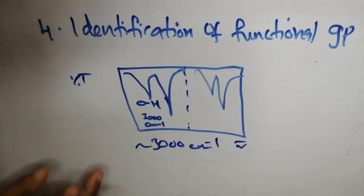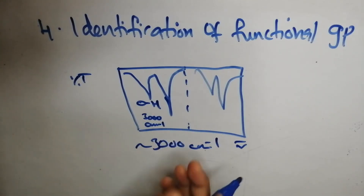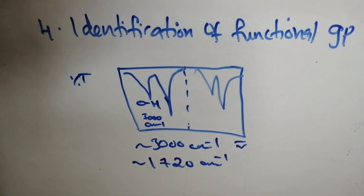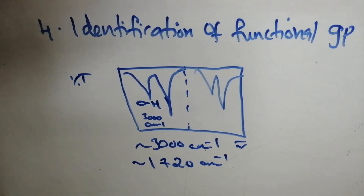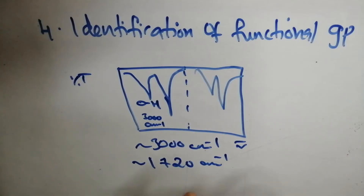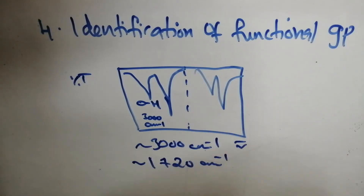If there is a peak in the range around 1700 to 1720 cm⁻¹, the spectrum indicates that the compound contains a carbonyl functional group. By comparing the observed spectral peaks and their absorption frequencies against a standard characteristic frequency table, we can identify the functional group present in the compound.